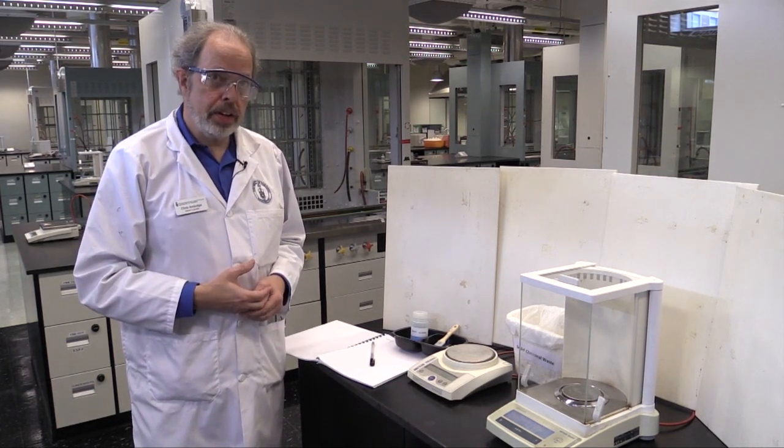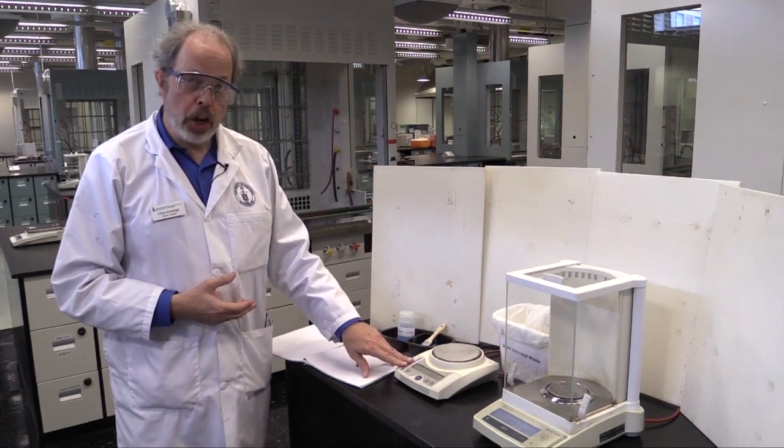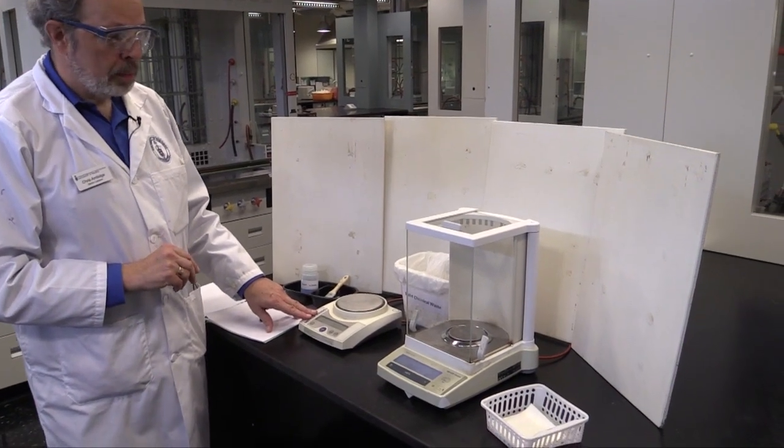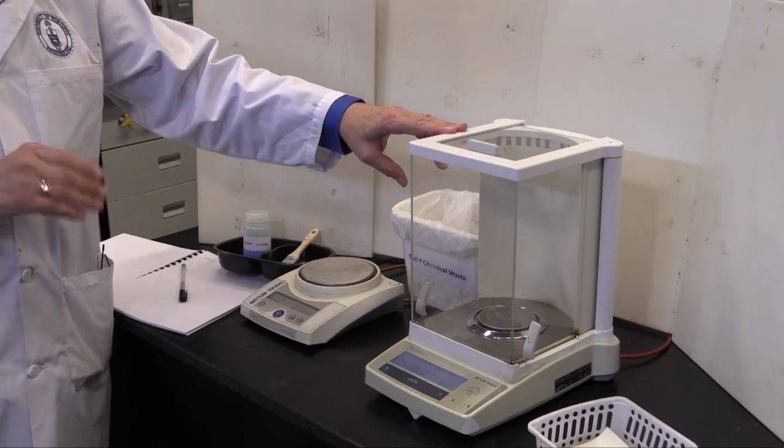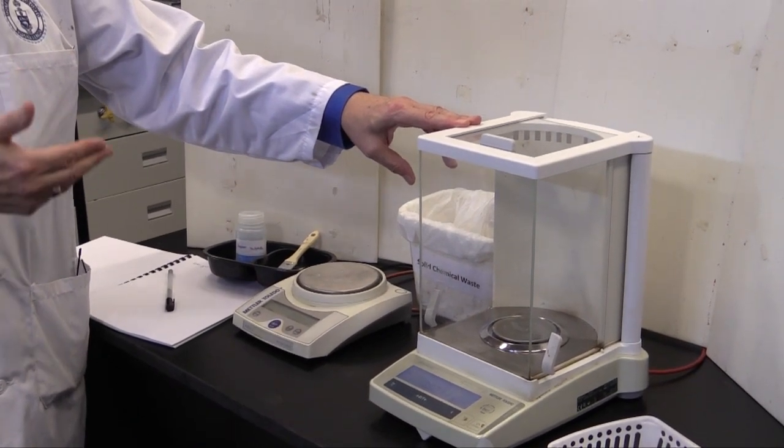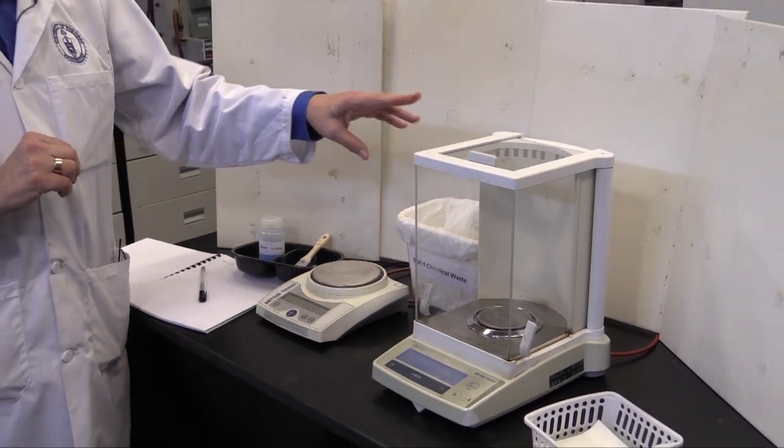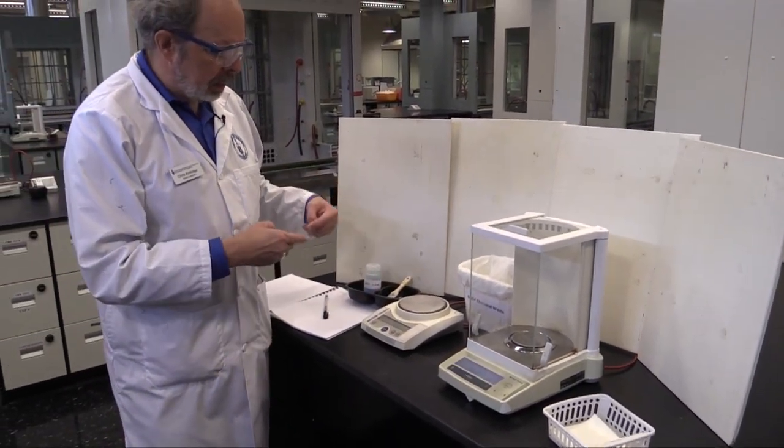There are two different kinds of balance in the laboratory. This is a top loader and it can read to two decimal places of grams. This in the glass case is an analytical balance. It's much more accurate. It can read to four decimal places of grams. We'll start off with the top loader and move on.